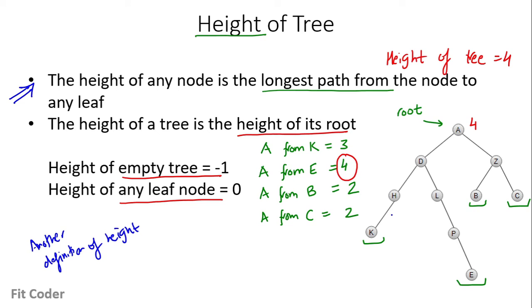Height of K is 0 because it is a leaf node — mark all leaf nodes as 0. Height of H is 1 because it is 1 edge apart from a leaf node. Height of D is 3 because it is 3 edges apart from E. Height of L is 2. Height of P is 1 because it is 1 edge apart from E. Height of Z is 1. We simply check the maximum number of edges a node is apart from any leaf node.